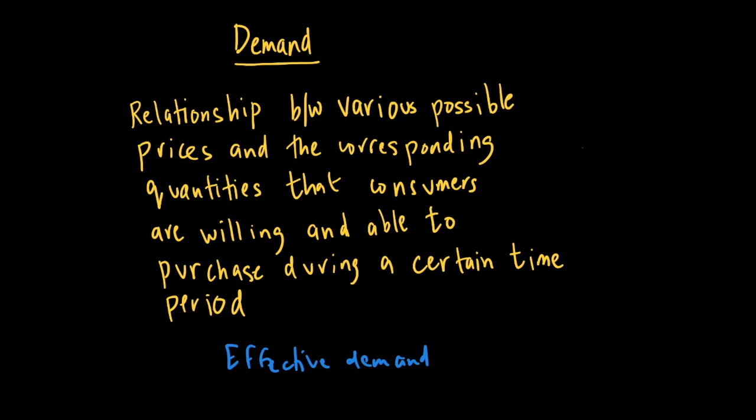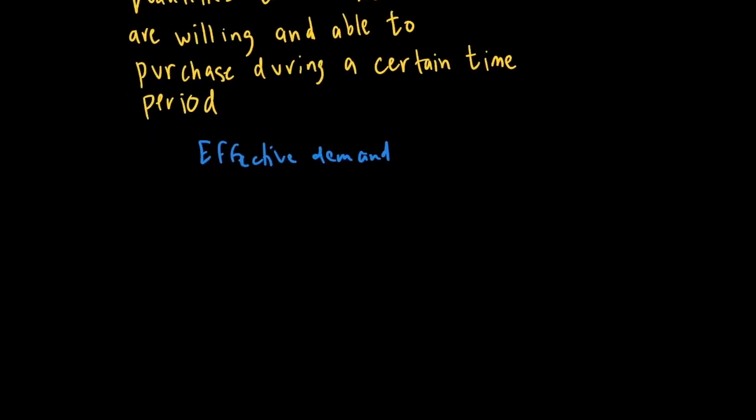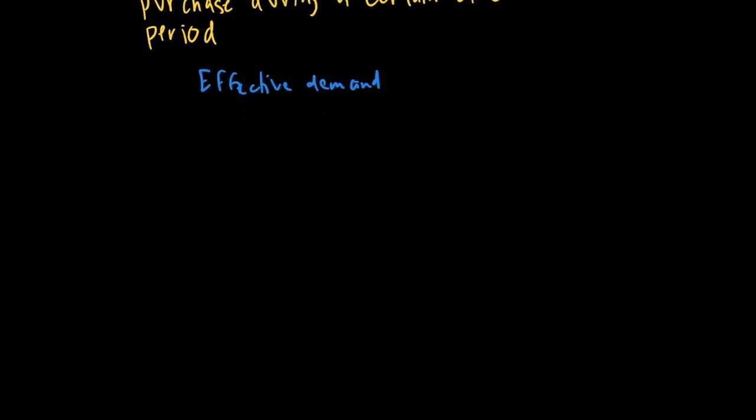The next thing we want to talk about is the demand curve. When you look at the relationship between price and quantity, we find that the relationship is downward sloping. In other words, when the price of a good goes down, you'll see people will tend to buy more of that good.